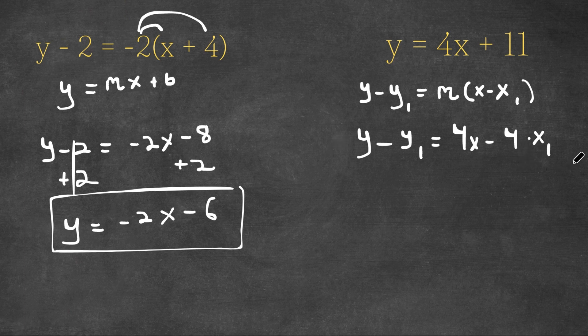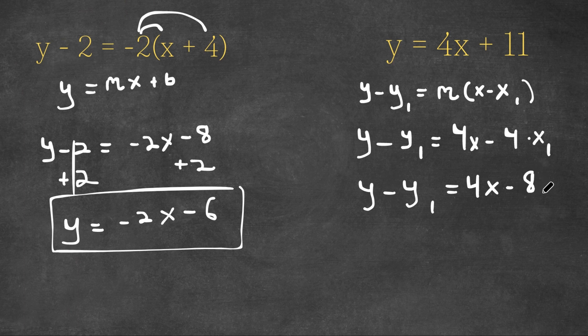So let's say x sub 1 is 2. If x sub 1 is 2, we get y minus y sub 1 is equal to 4x minus 4 times 2 is 8. So we need negative 8 to get 11. Well, negative 8 plus one number is 11, 19. So that means that y sub 1 is 19. So we get y minus 19 is equal to 4x.